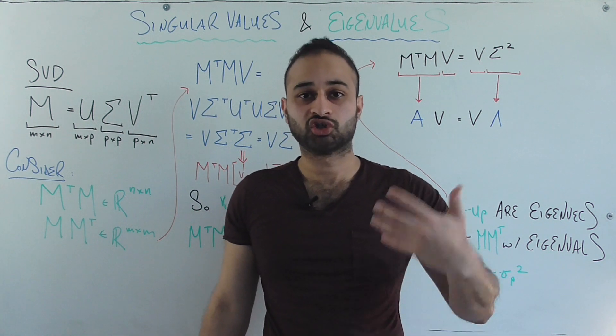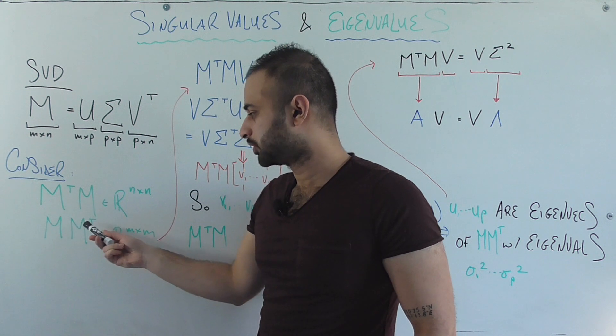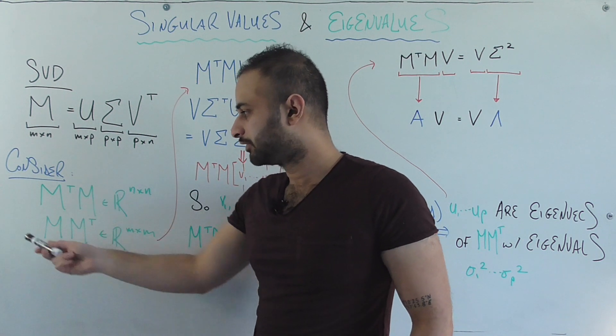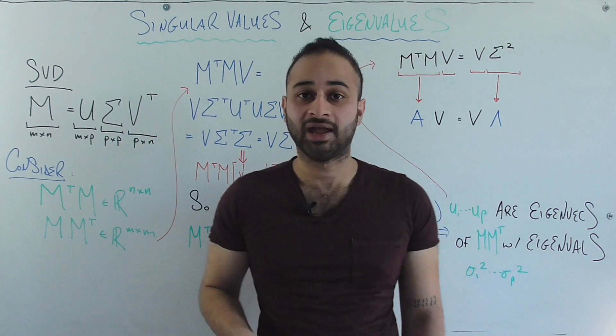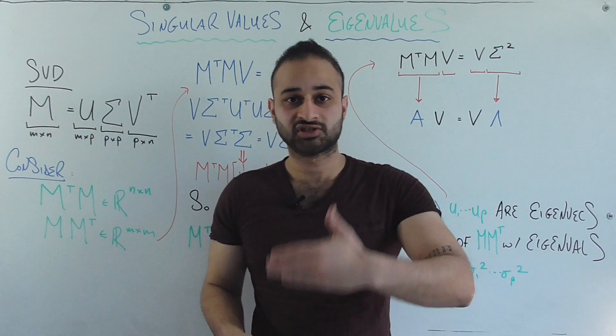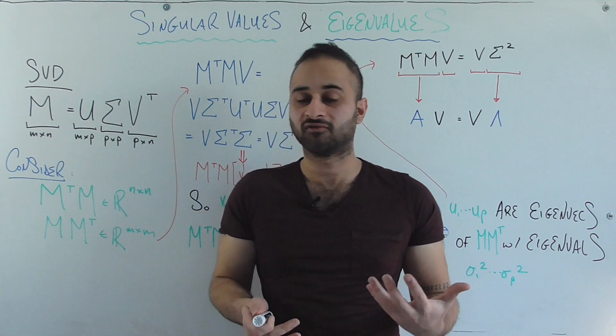Let's next consider some transformations of M. So let's consider M transpose M and MM transpose. These are both valid multiplications, and the resulting dimensionality is N by N in this case, and M by M in this case. So both of these things are square matrices. That's going to help us get into the terrain of eigenvalues now.